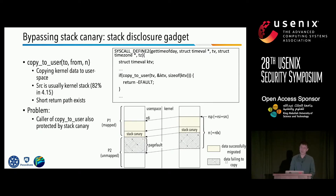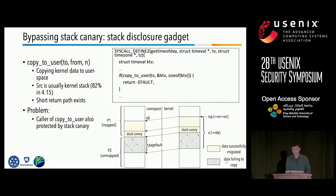To address the stack canary, Kepler uses another family of gadgets called stack disclosure gadgets. Similar to the stack smashing gadget, the ability to leak the canary is empowered by the kernel function copy_to_user. The function copy_to_user takes three arguments indicating destination, source, and length of data to copy from kernel to user space. If copy_to_user returns a non-zero value, the caller function — such as gettimeofday — will return an error immediately. By redirecting control flow to before the call site of copy_to_user, we can set the source buffer to the kernel stack and force a short return path by constructing a page fault. However, the caller of copy_to_user is also protected by a stack canary, requiring the auxiliary function gadget.